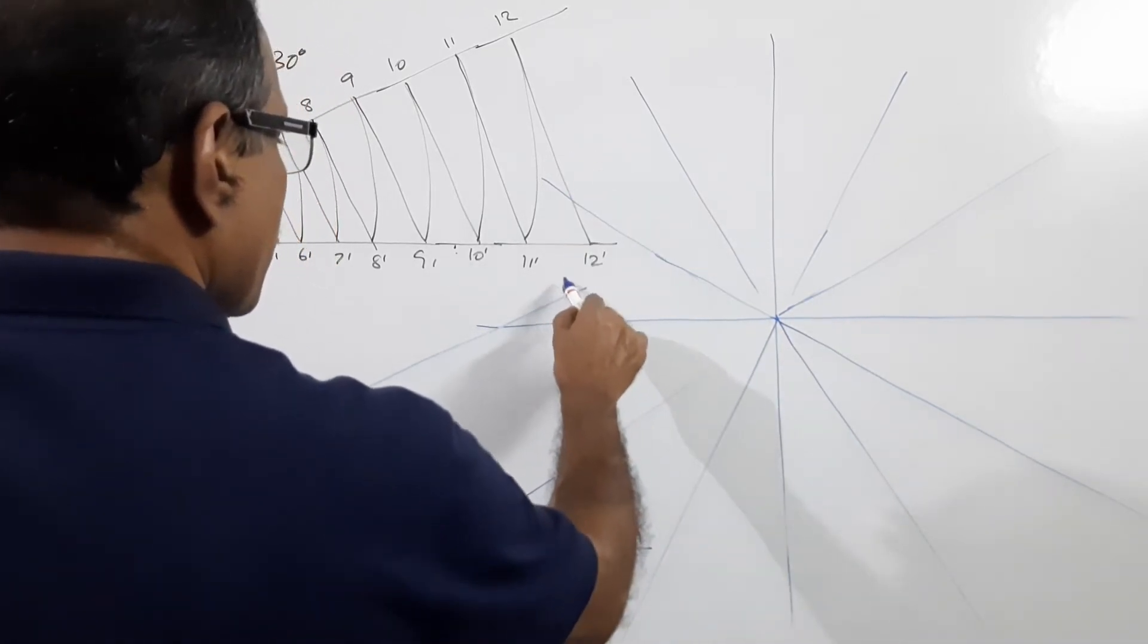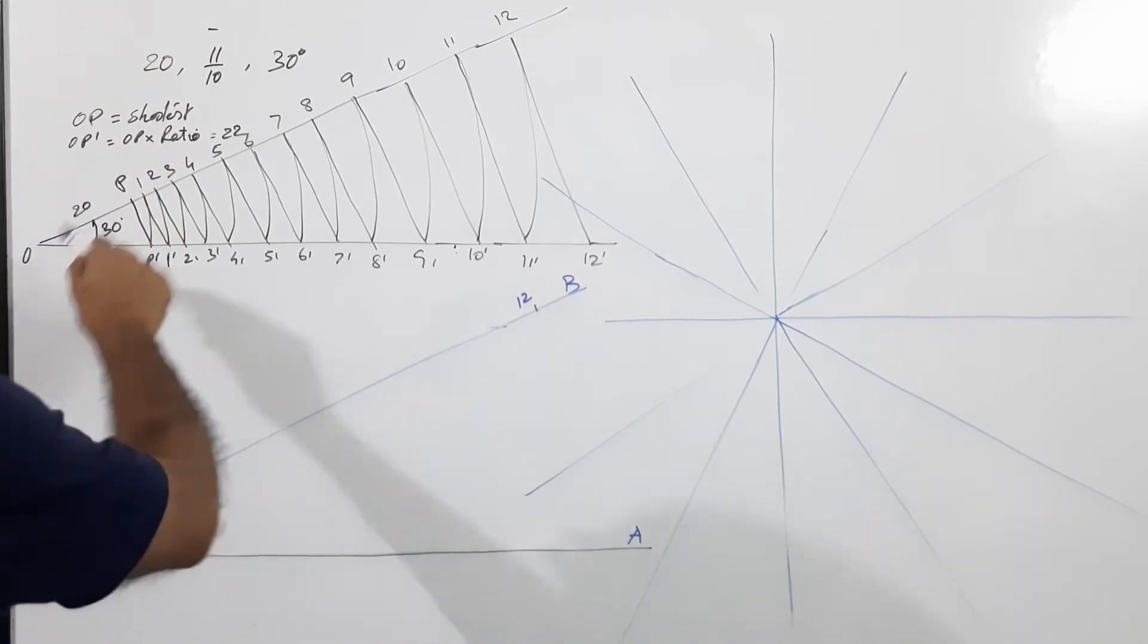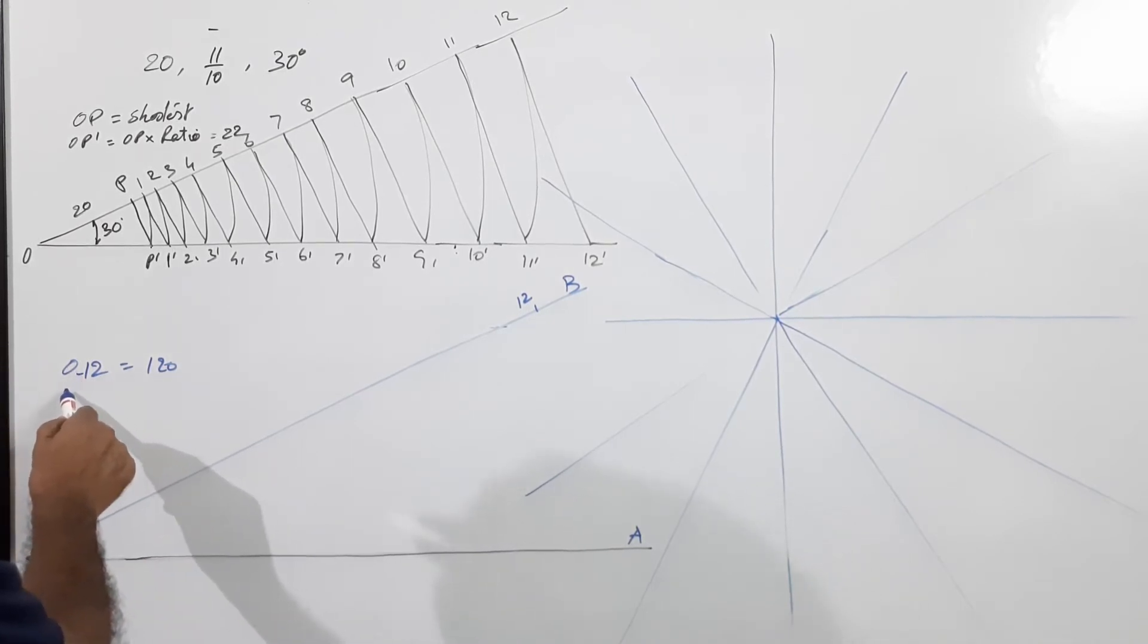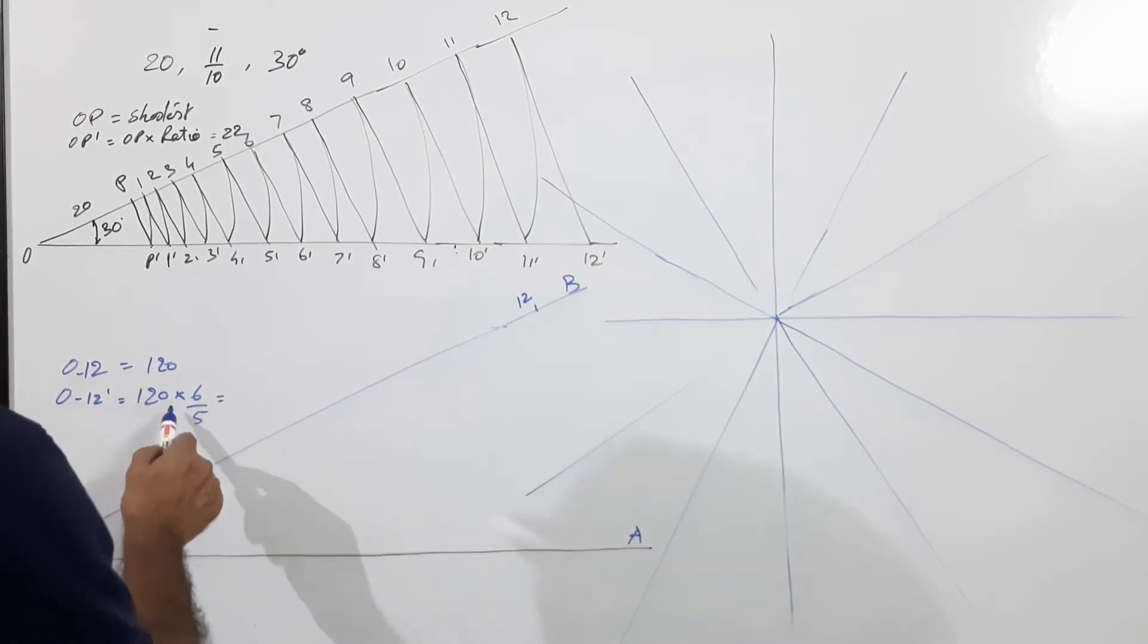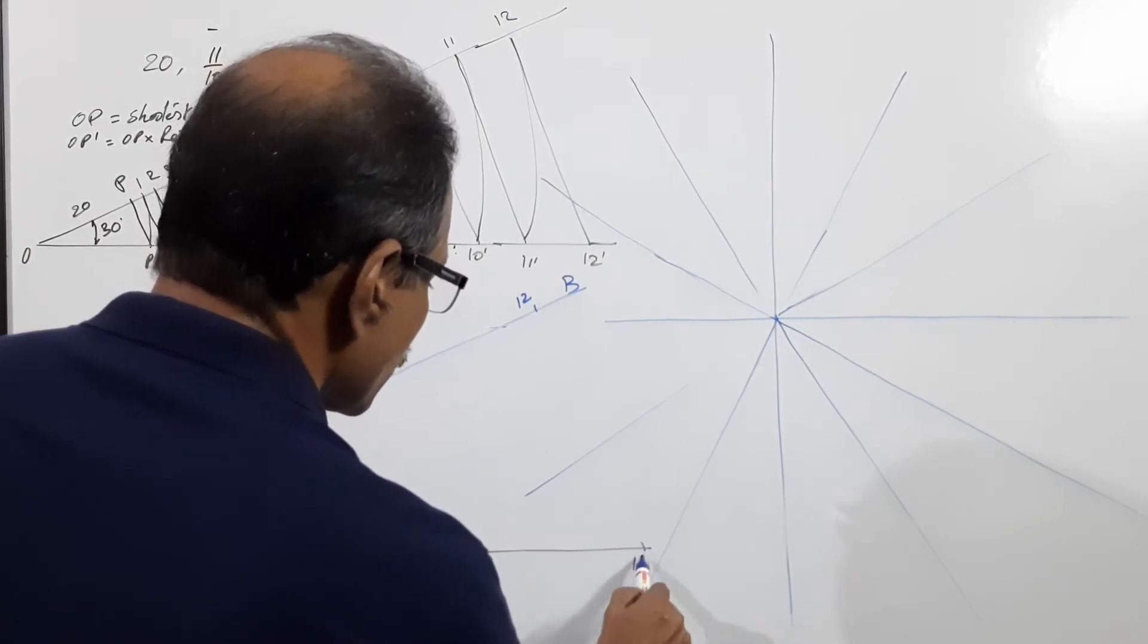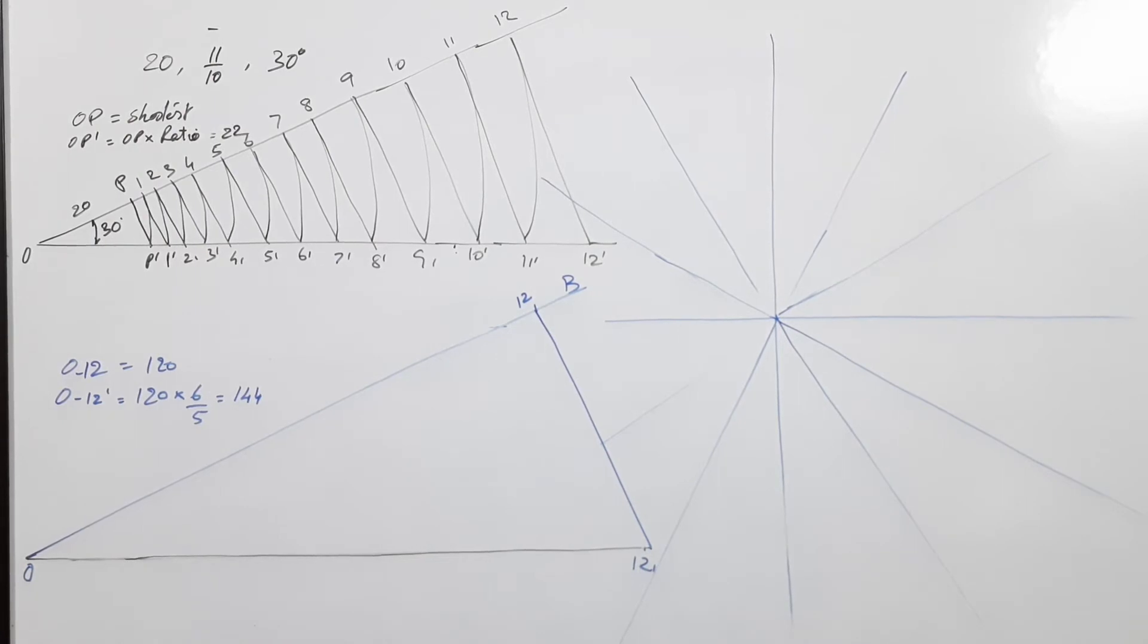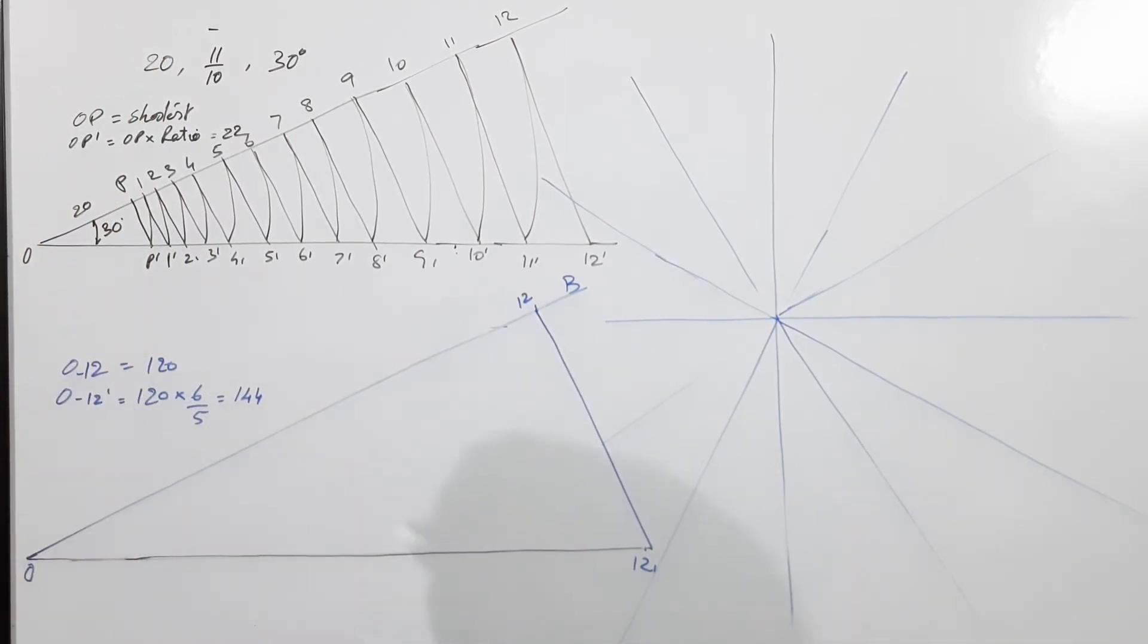Draw OA and OB on this line. Locate 12, where O12 equals 120. Calculate O12 dash equals 120 into 6 by 5, which gives 144. Measure 144 and mark here as 12 dash. Connect 12-12 dash by a straight line. Now compare this: 12-12 dash. O12 is 120mm, the largest radius, this angle is 30 degrees.